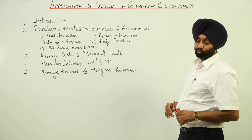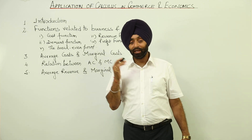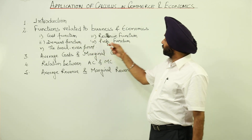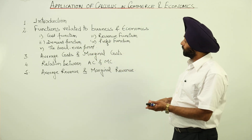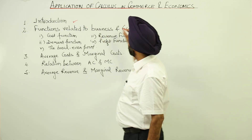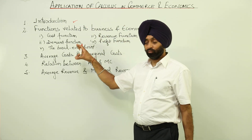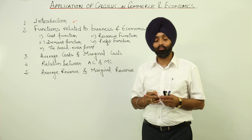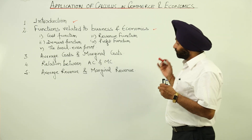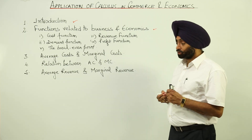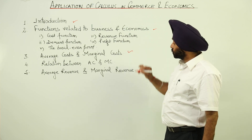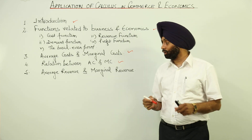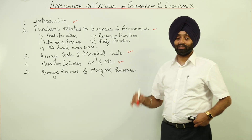Now what are we going to do in this chapter? First of all, I am going to give you a very nice introduction about the chapter, and then we are going to cover functions related to business and economics — including cost function, revenue function, demand function, profit function, and the break-even point. After that, average cost and marginal cost, the relation between average cost and marginal cost, and finally average revenue and marginal revenue.